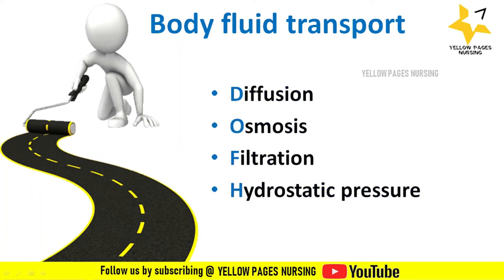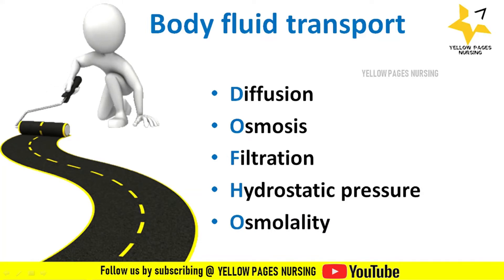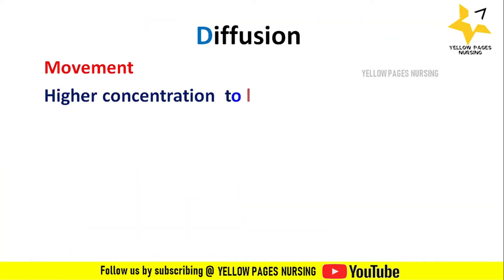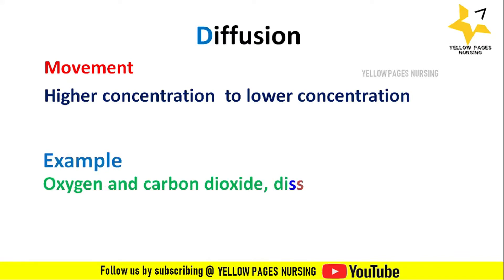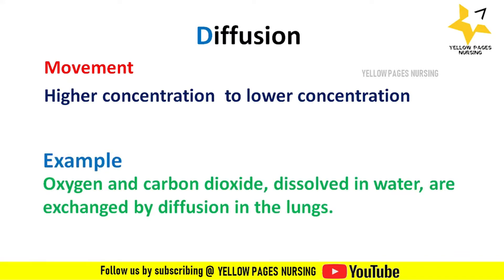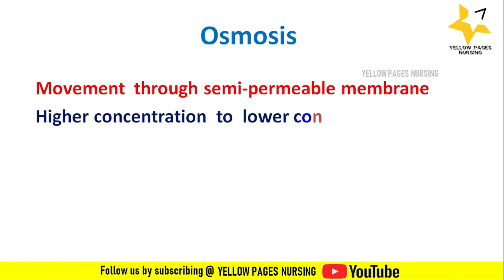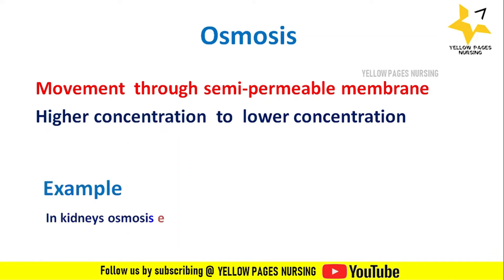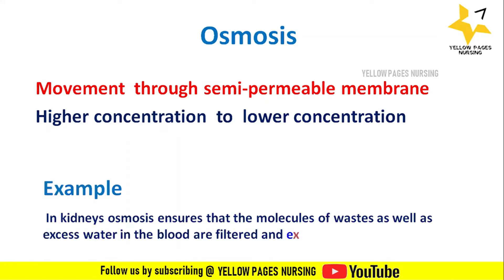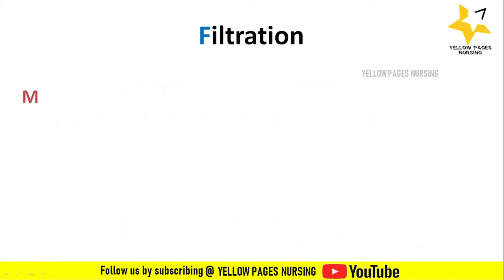Diffusion is the movement of molecules from higher to lower concentration — for example, oxygen and carbon dioxide are exchanged by diffusion in the lungs. Osmosis is movement through a semi-permeable membrane from higher to lower concentration; in the body, water moves between compartments this way. For example, in the kidneys, osmosis ensures waste and excess water are filtered and expelled.